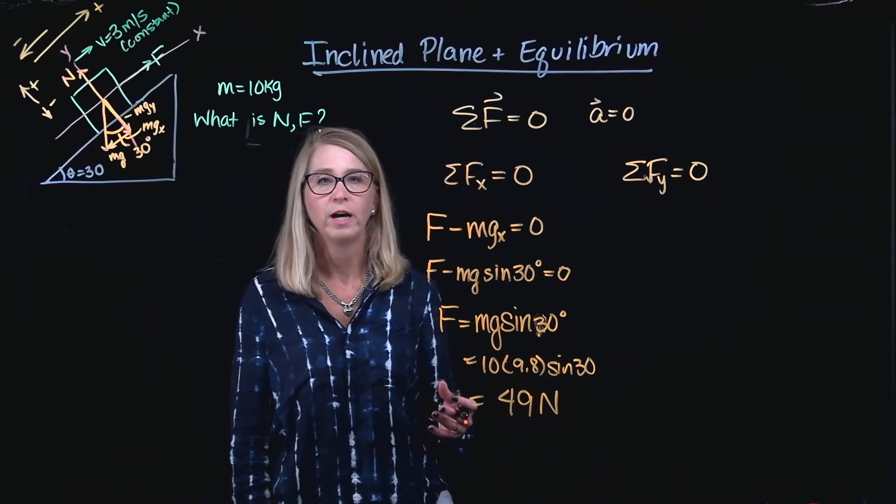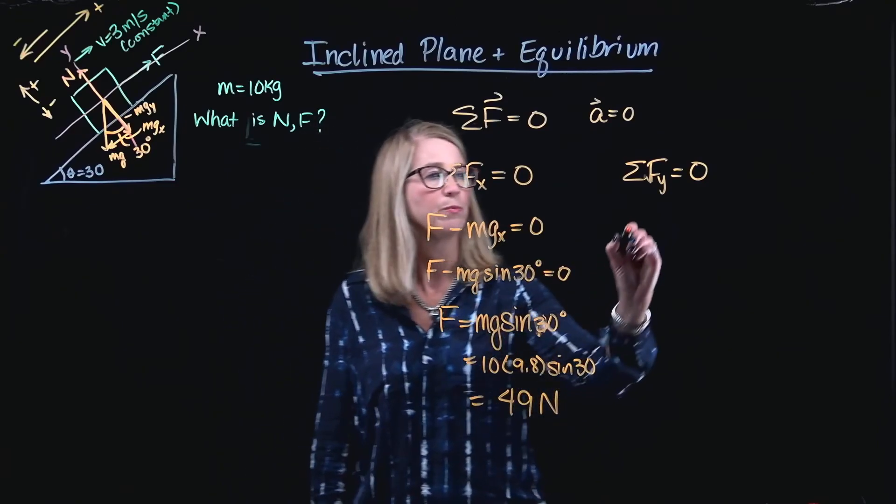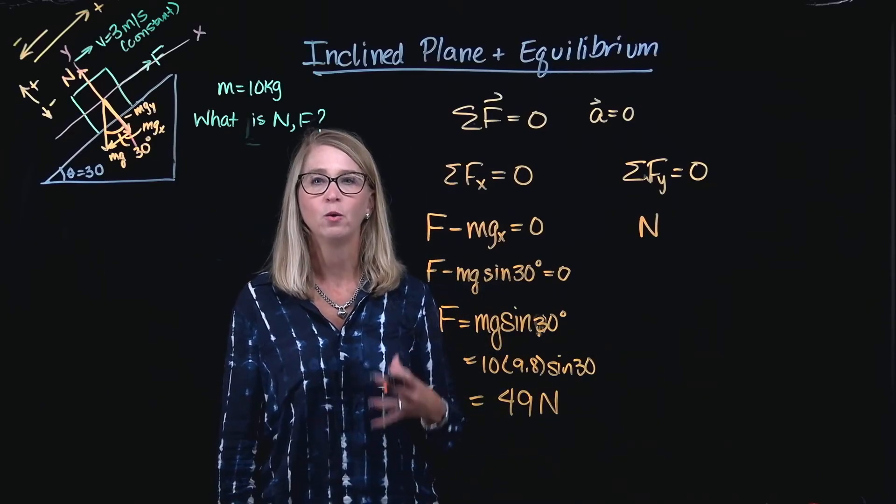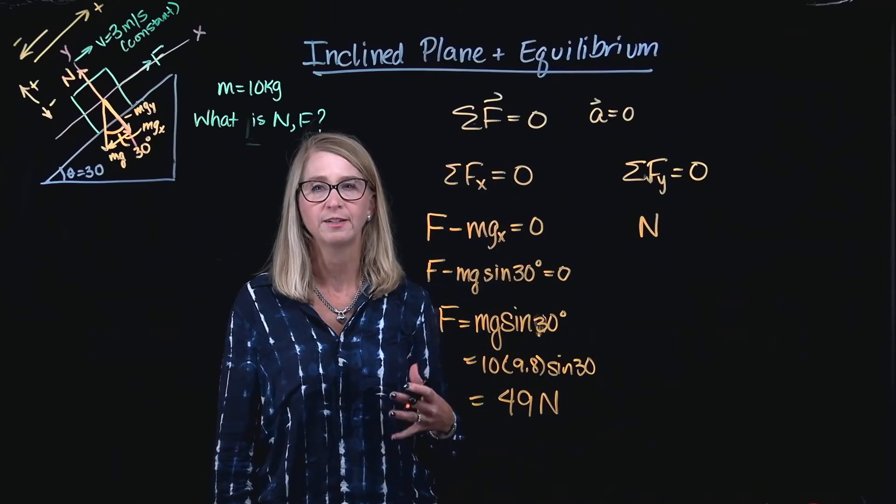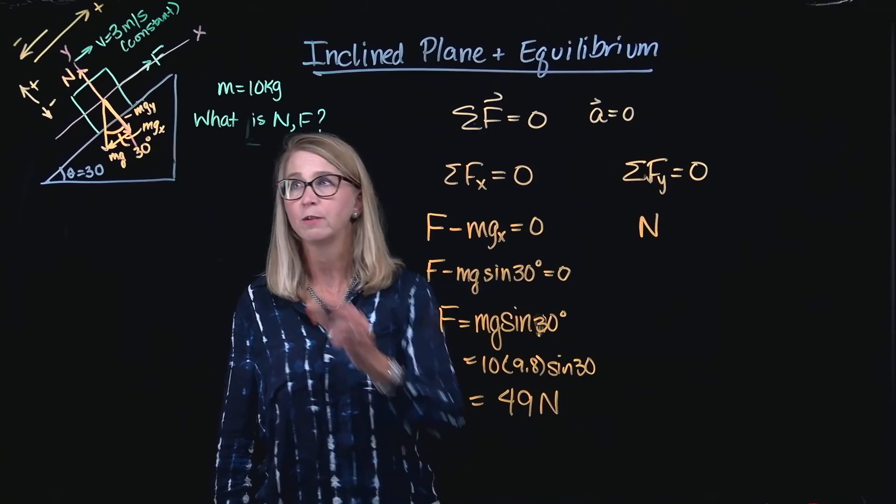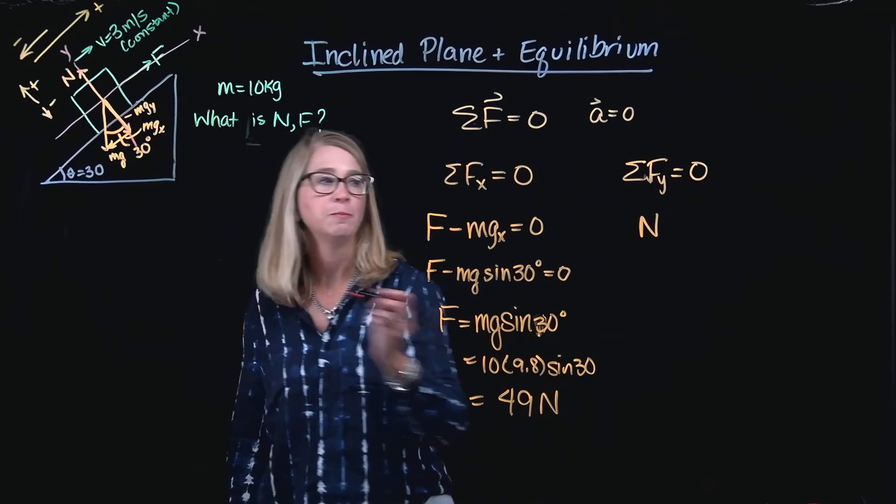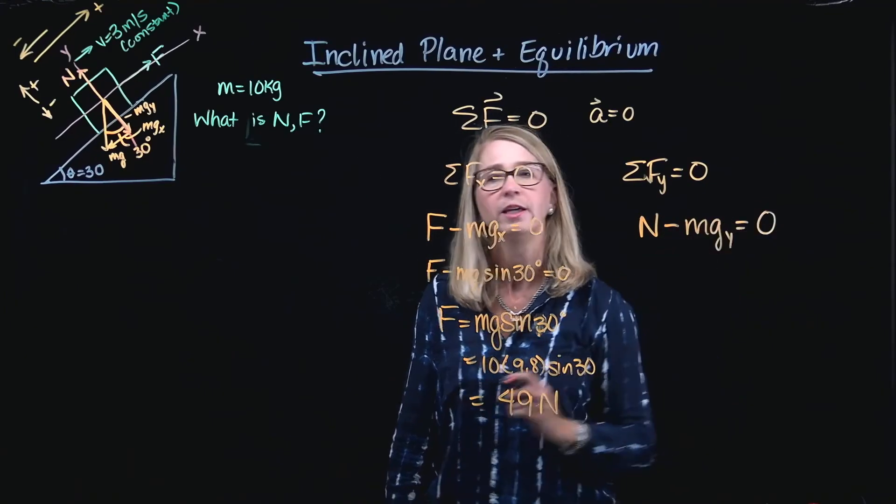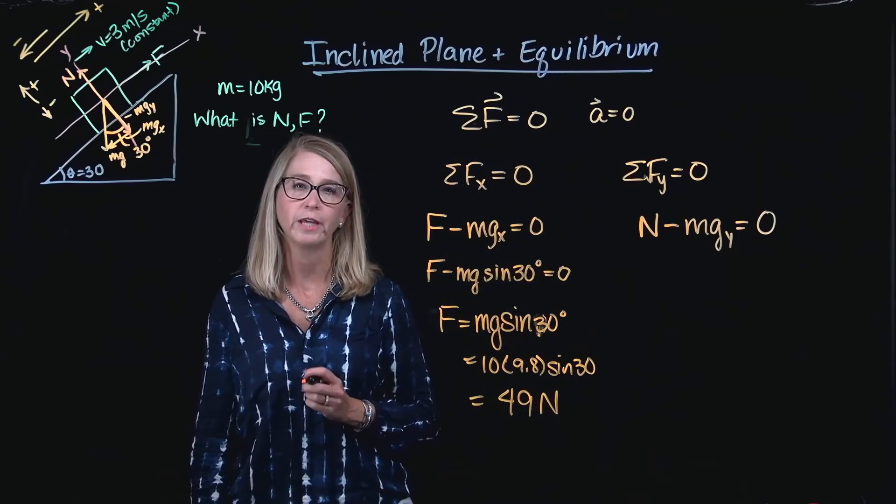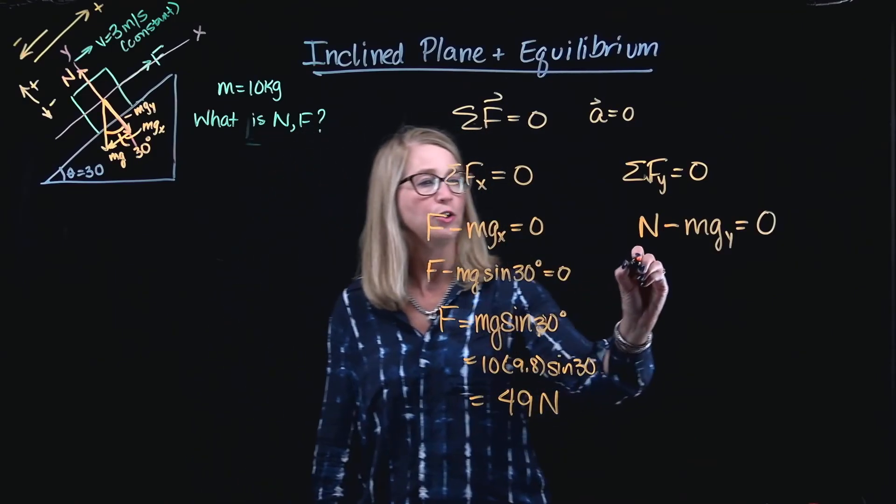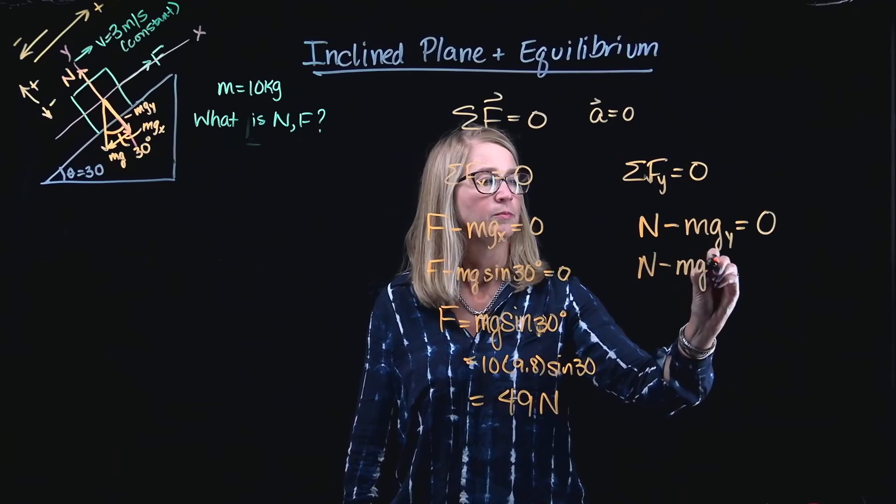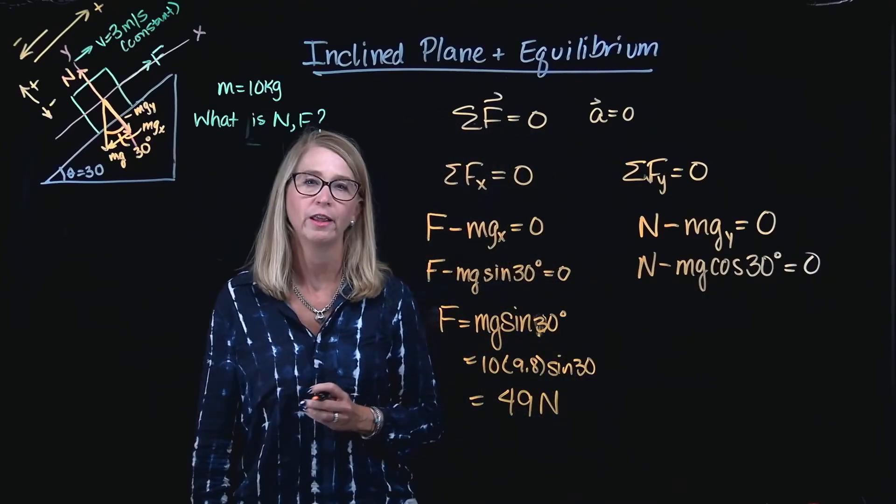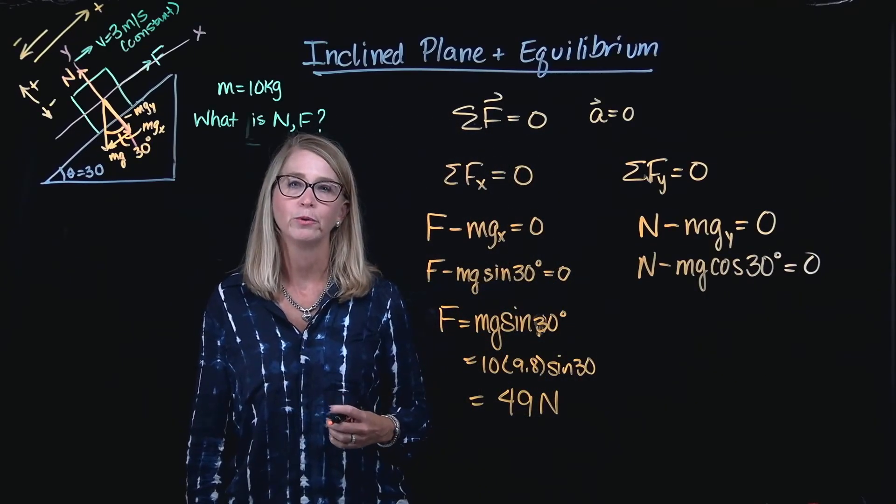Now, let's look at the y direction to find an expression for the normal force. The normal force acts straight up in the positive y direction, and the y component of weight is acting in the negative y direction. The y component of the weight, which is right here, is represented by the side that is adjacent to the angle theta. So we're going to use cosine to calculate the y component of the weight.